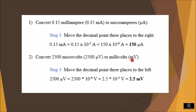Now consider the second problem: convert 2500 microvolt to millivolt. In this case, we move the decimal point three places to the left. We write 2500 × 10⁻⁶ V, and after moving the decimal point we get 2.5 × 10⁻³ V, where 10⁻³ is milli. So the answer is 2.5 millivolt.